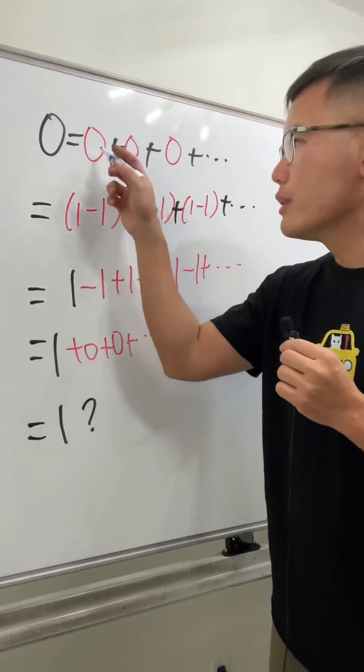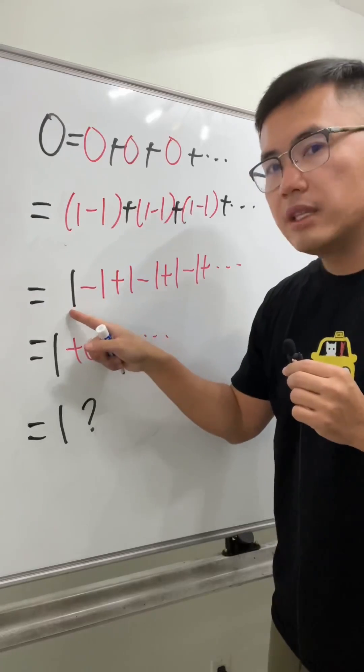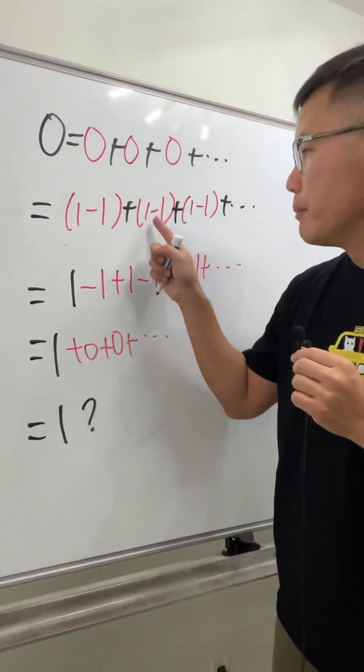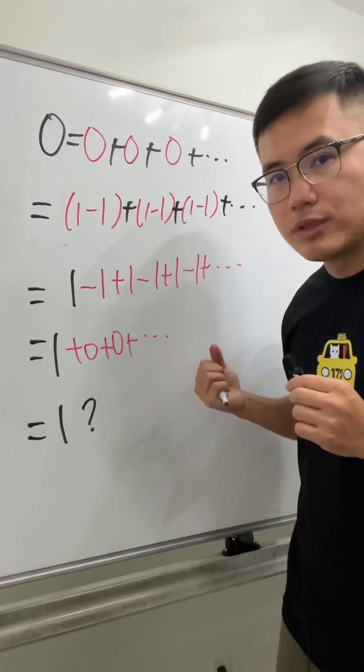So we replace all the zeros with one minus one. And then we kept the very first one, and here we have negative one plus one, negative one plus one, negative one plus one, and so on.